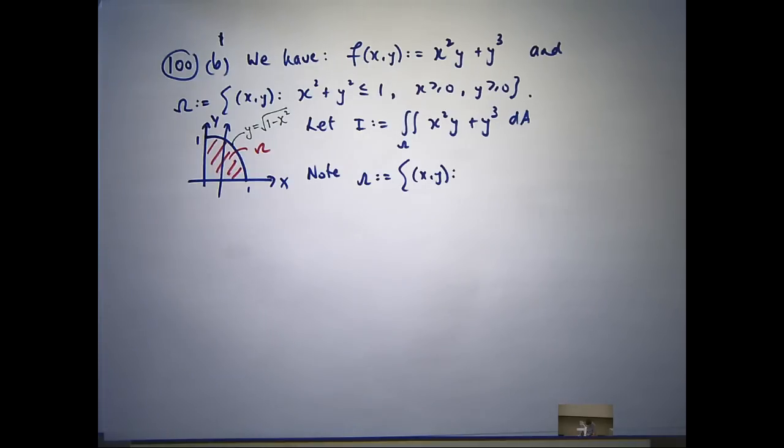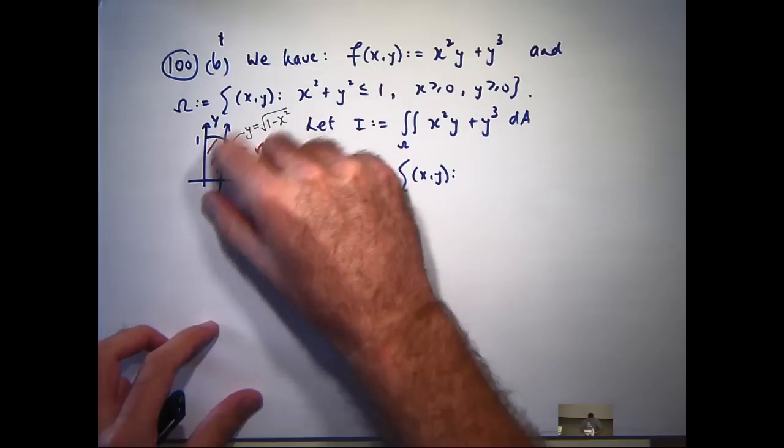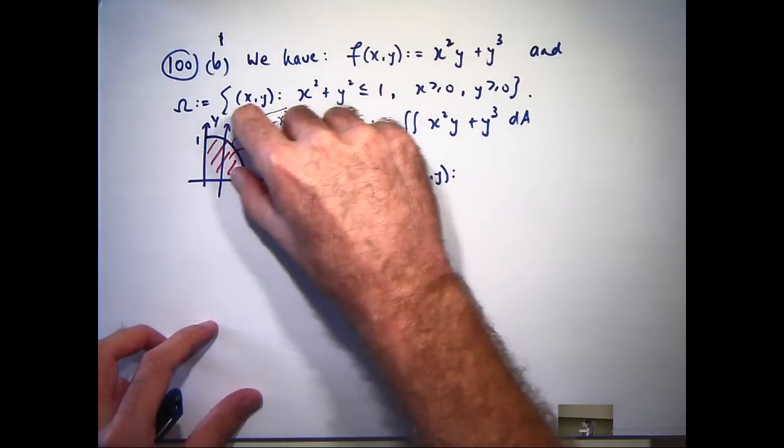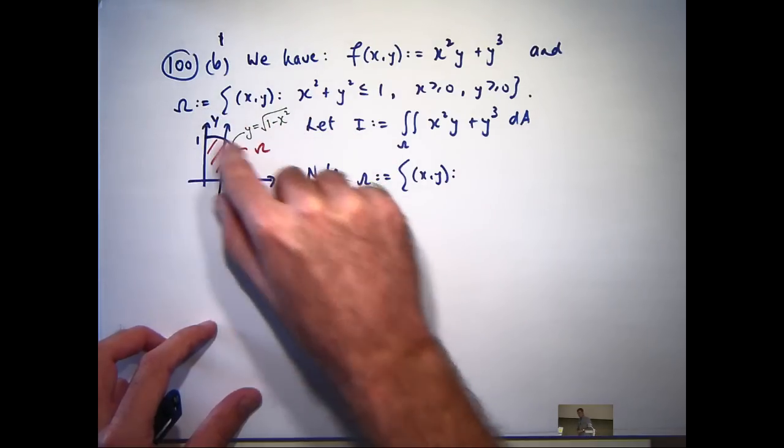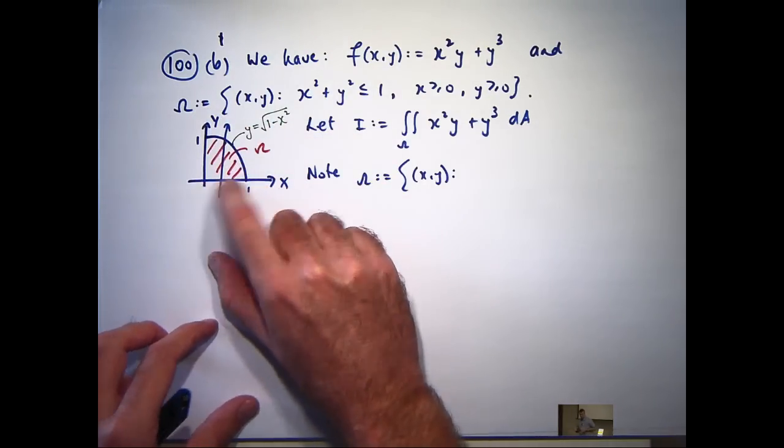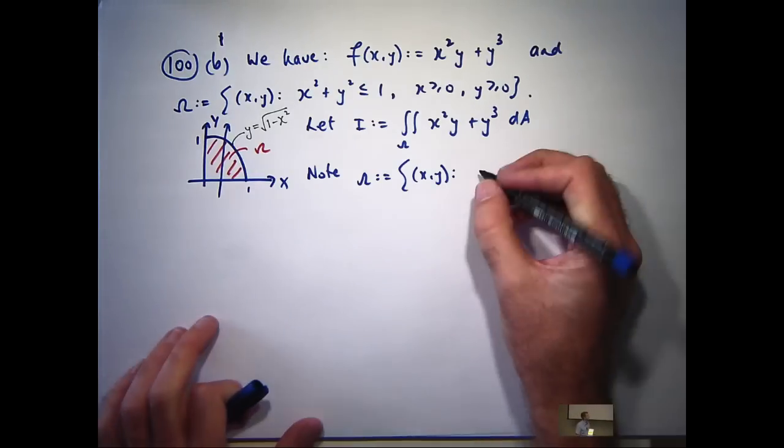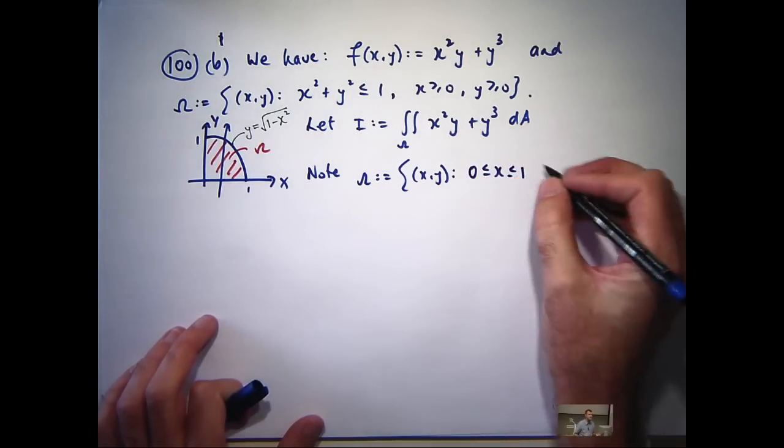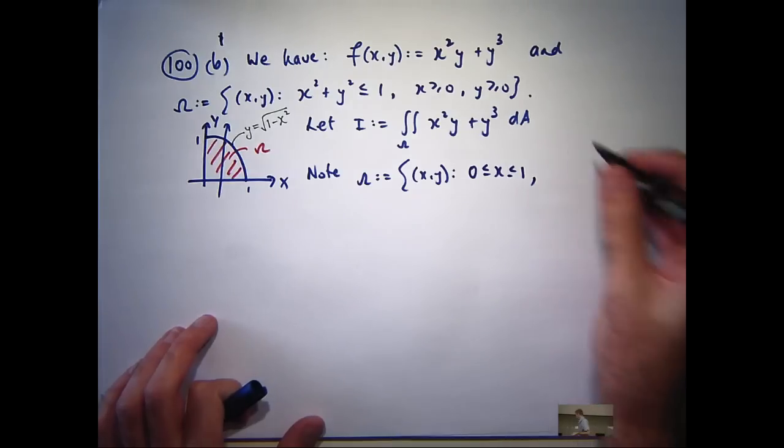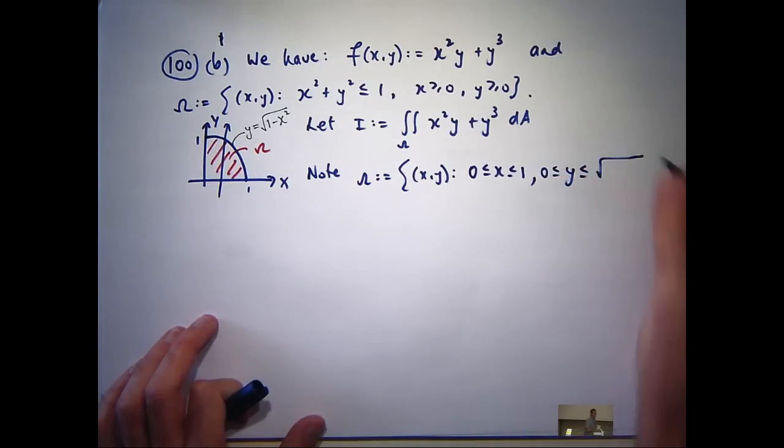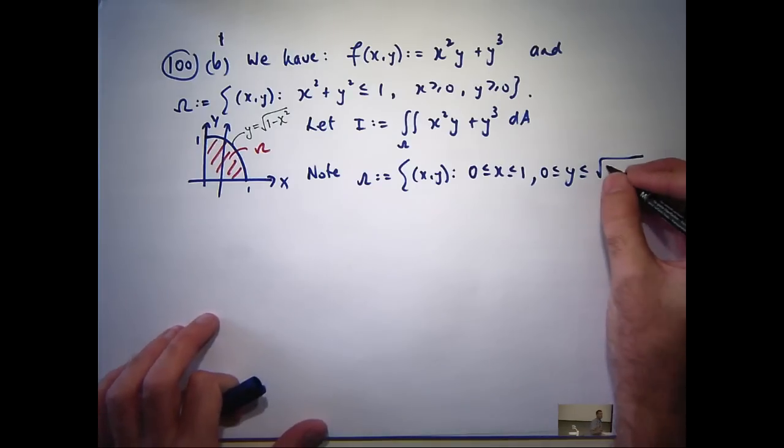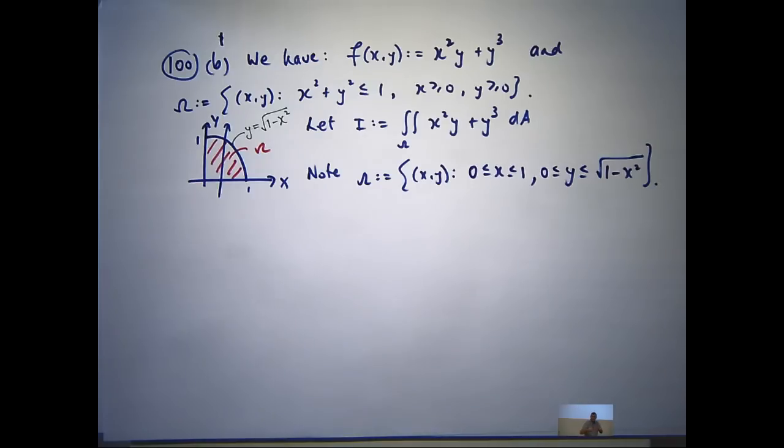What about the x bounds? What are they going to be? Yeah, 0 to 1. So all I need to do is take this vertical line and shift it and see how far I need to go along the x-axis to cover the entire quarter disk. So it would be between 0 and 1.